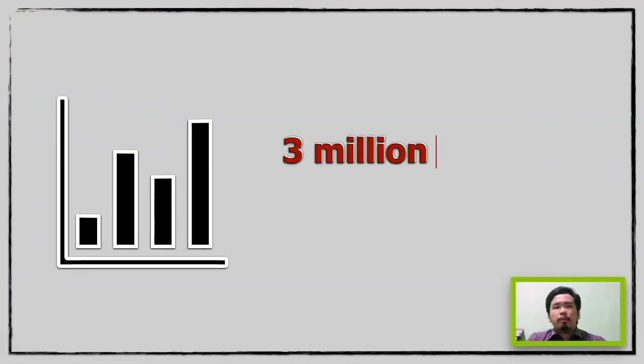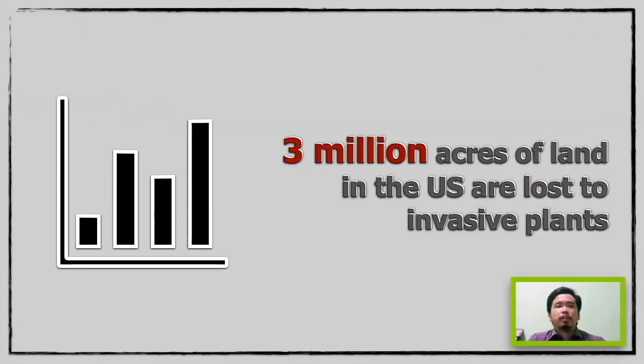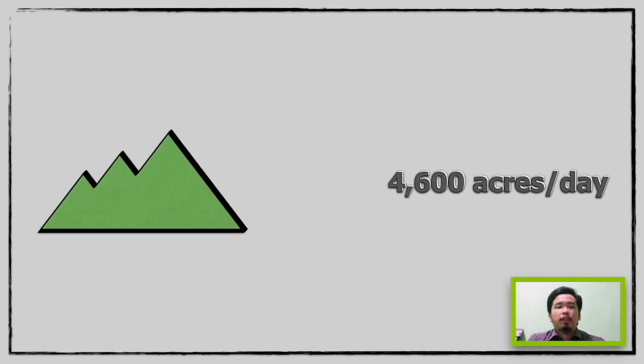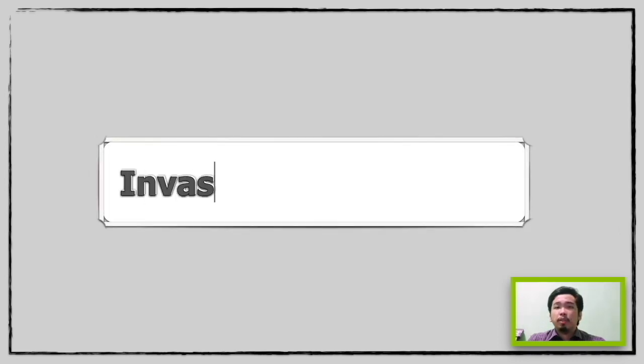Please show us the answer. Every year, there are almost 3 million acres of plants in the U.S. that are lost to invasive plant species. That equates to over 4,600 acres of plants that are lost every day due to invasive plant species. But what exactly are these invasive plant species?